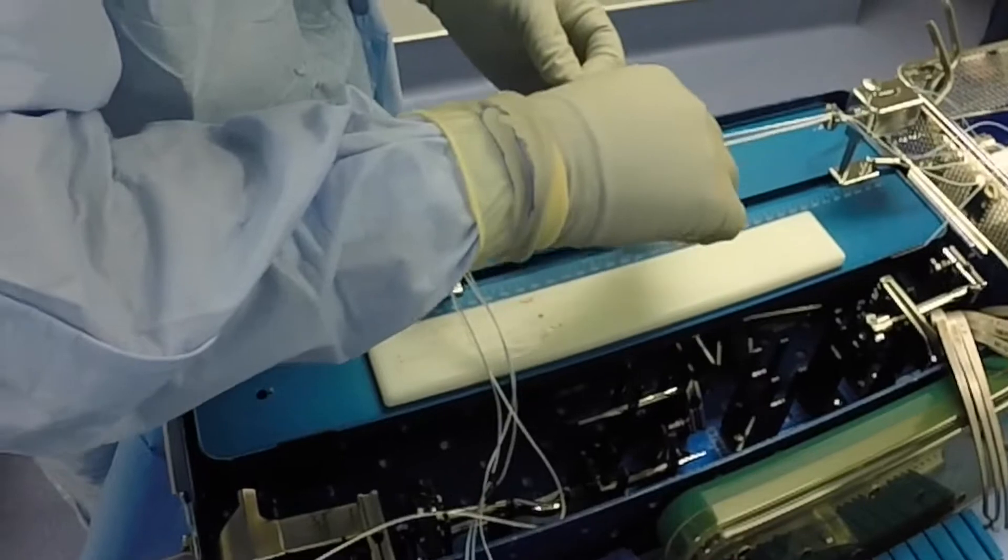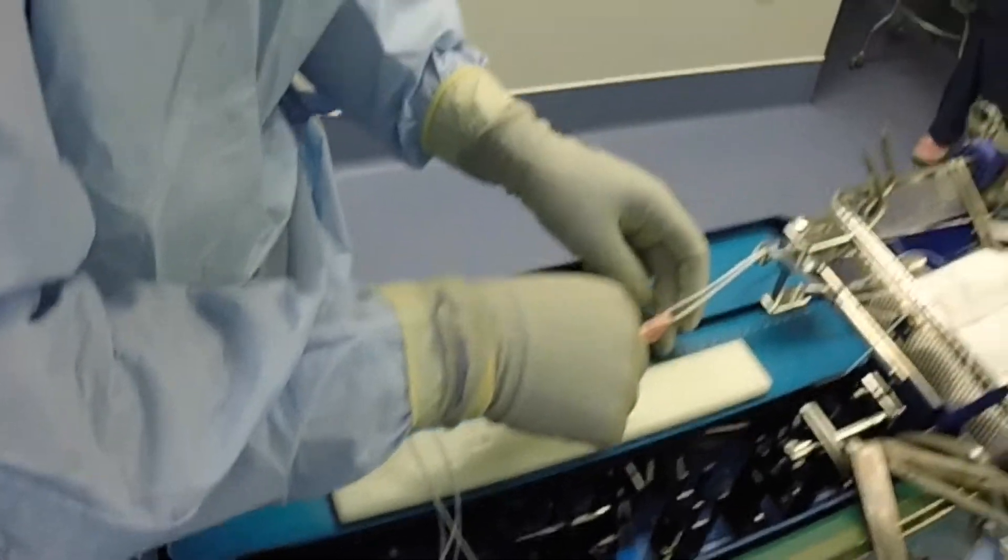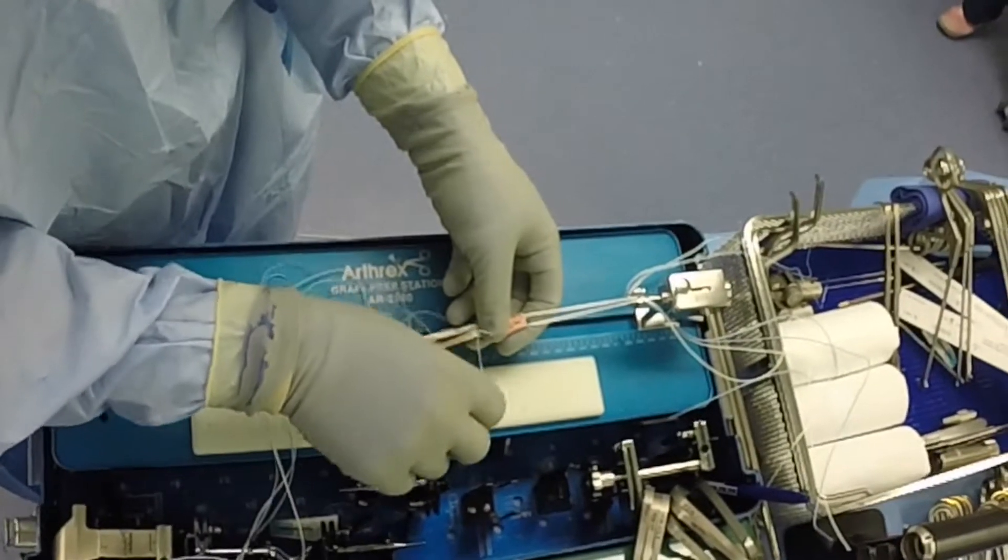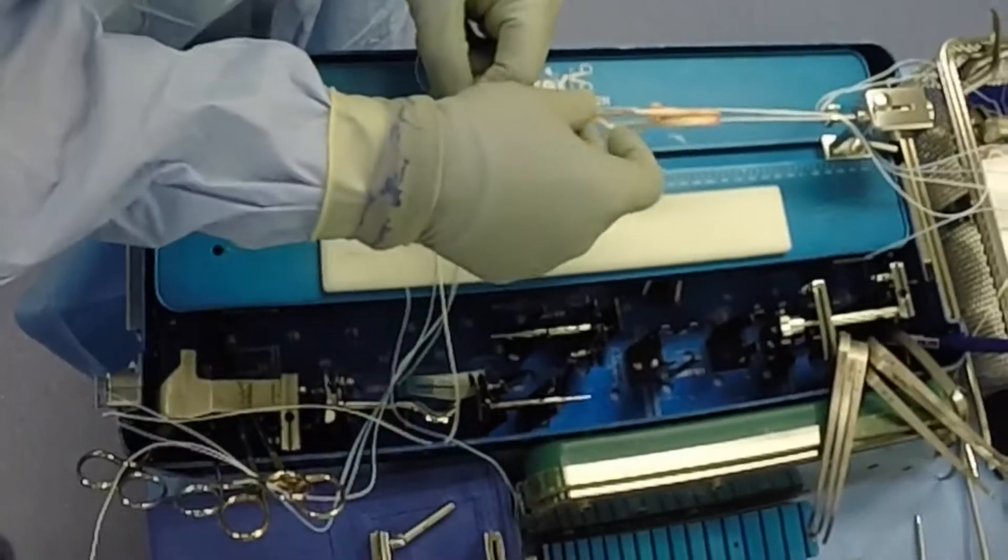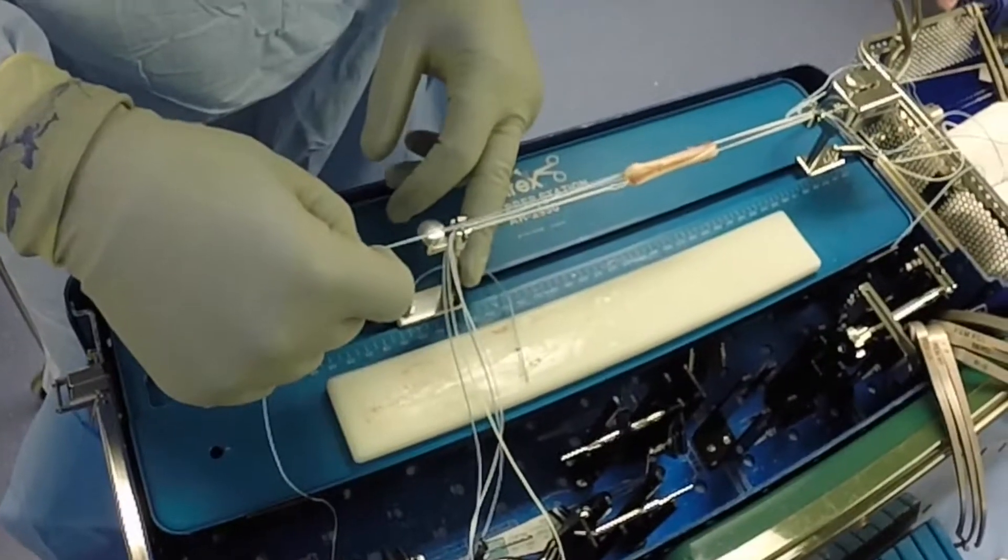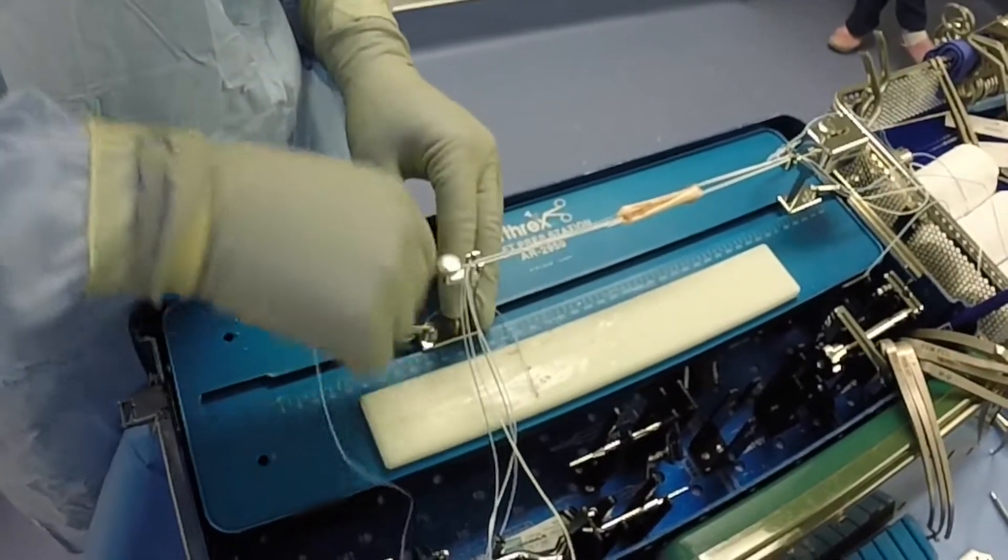The doubled-over graft is then passed through that TightRope to quadruple the graft. The tails of the fiber loop suture are then passed through the center of the two tails, one strand exiting each side, in order to dock the quadruple tendon centrally within the graft and secured.